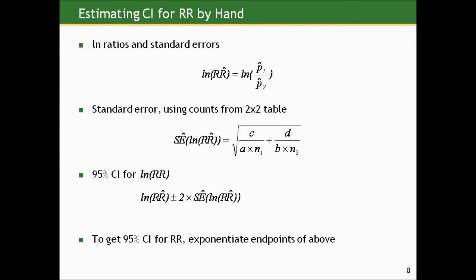It's given by the square root of c, which is the number of persons in the exposure group who did not have the outcome, divided by the number who did times the overall size of the exposed group, and then plus d, the number of persons in the unexposed group who did not have the outcome, divided by the number who did times the size of the unexposed group. And this is the formula. It's actually not too hard to compute by hand. Involves all four cells of the 2x2 table plus the totals, in our case the column totals.